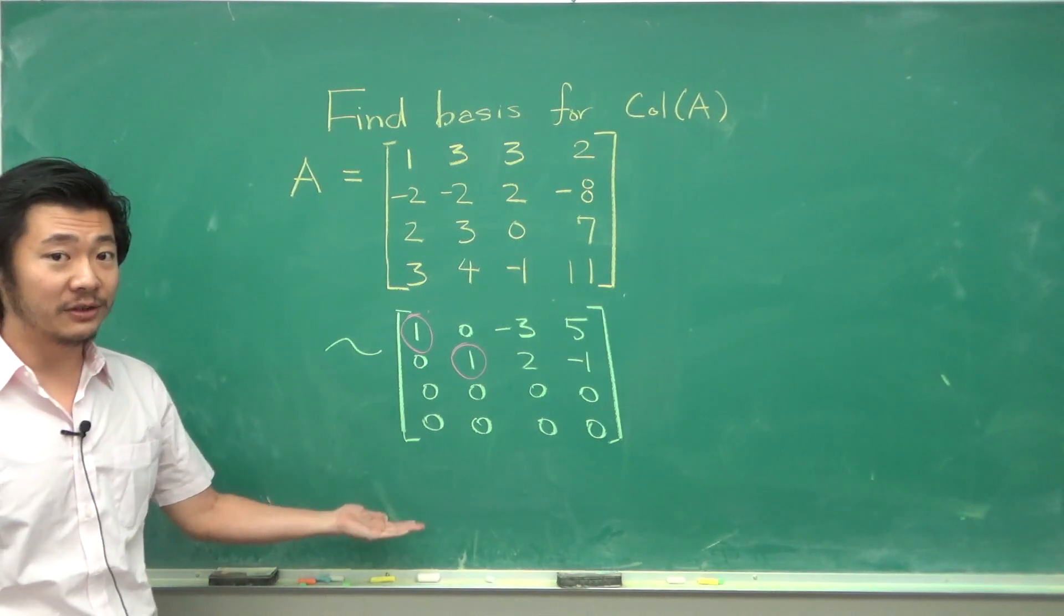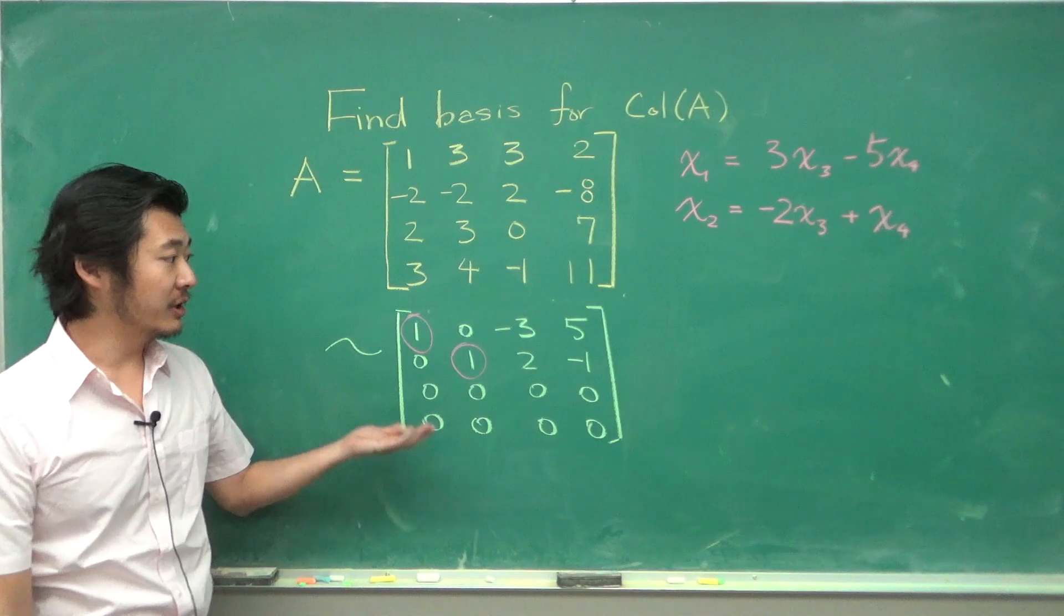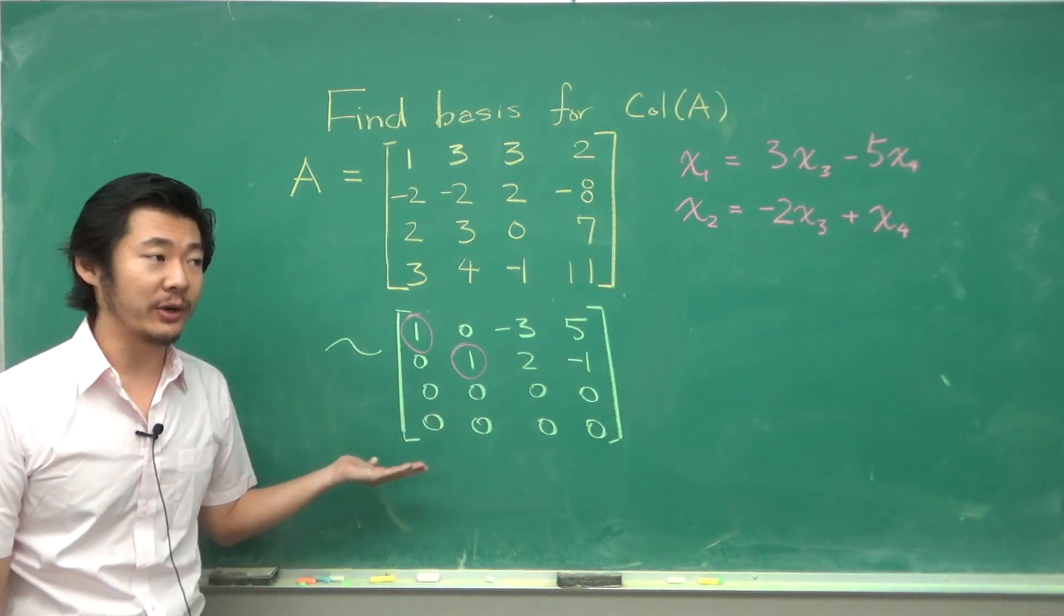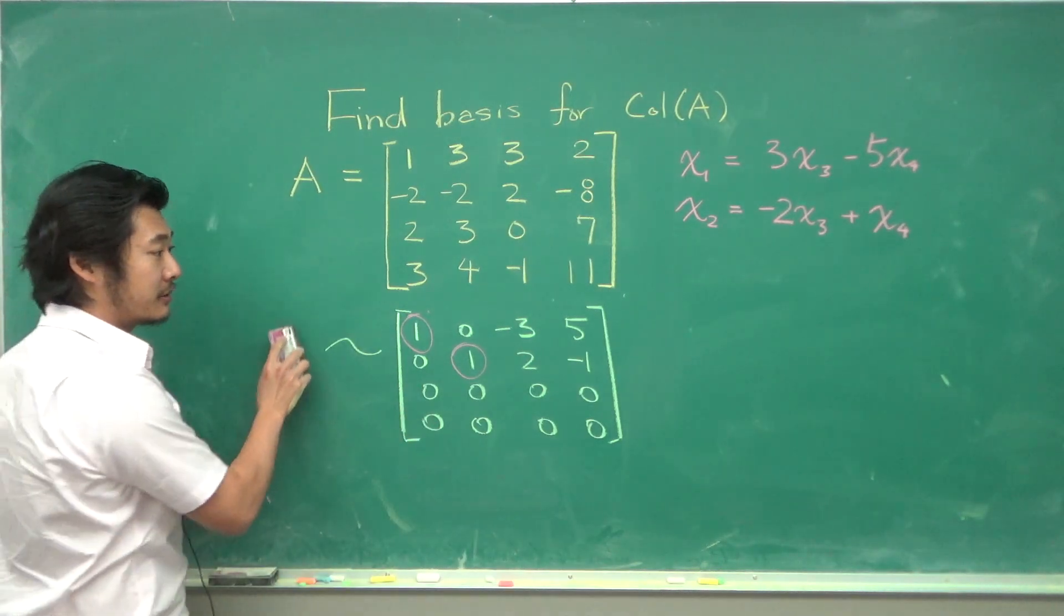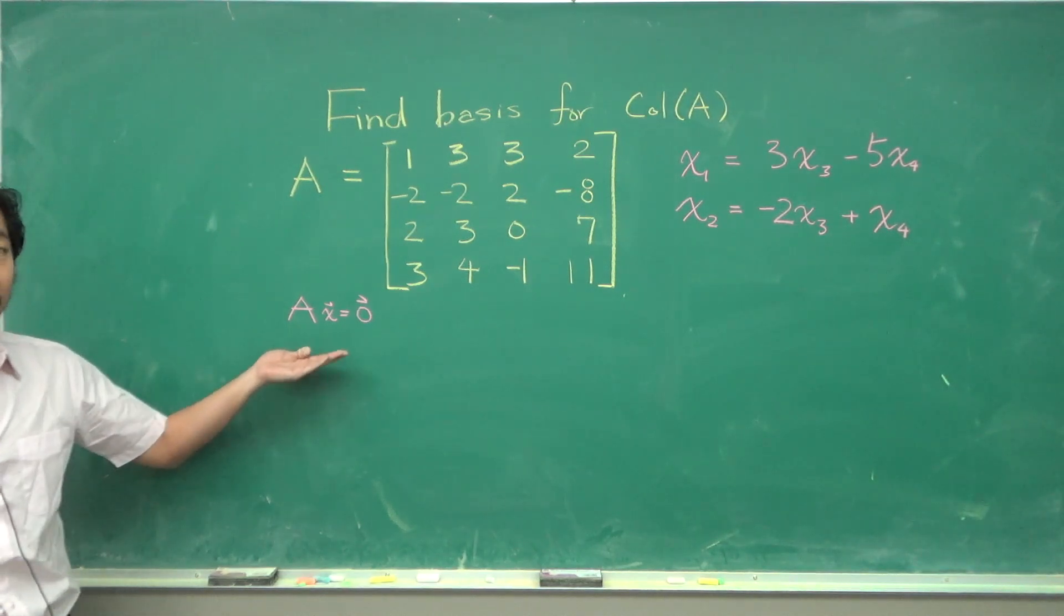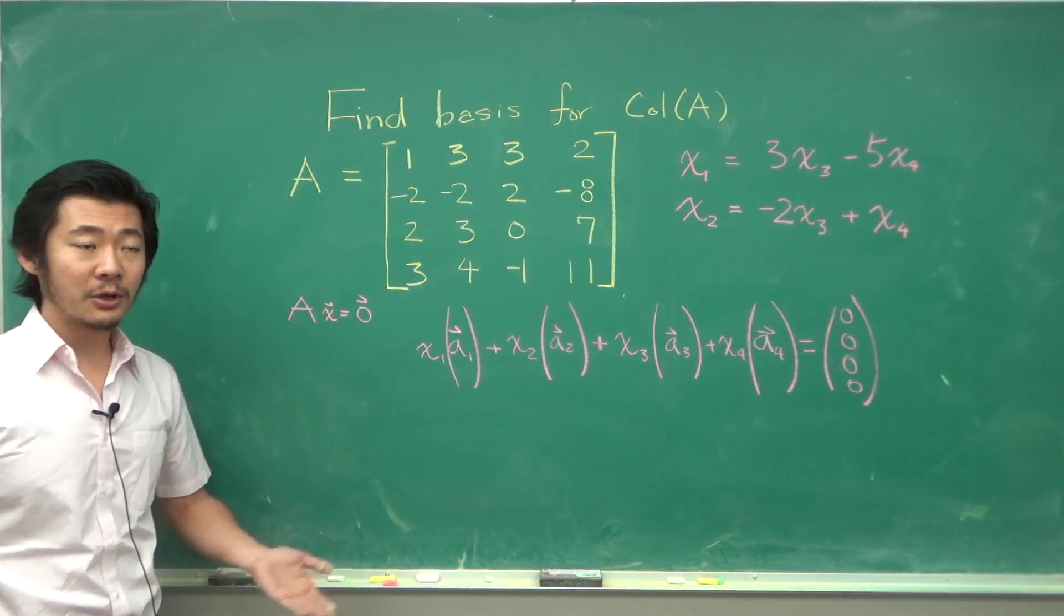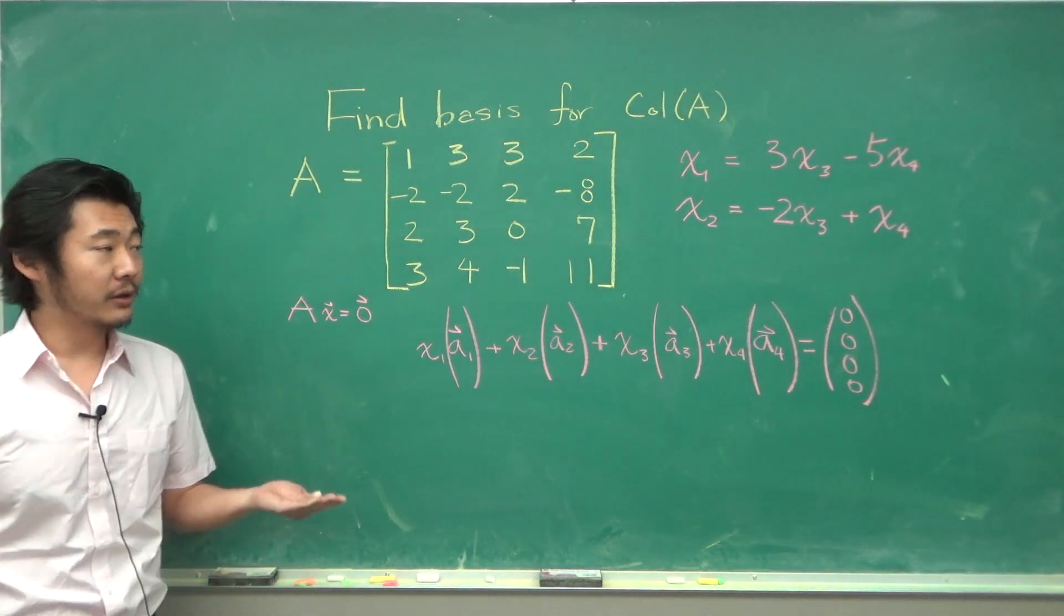So if we write out how the variables depend on each other we have something like this. Remember this was for a homogeneous equation. Now if we write out the homogeneous equation in terms of the columns of A we get something like this, and since x3 and x4 are free variables we can set them to be whatever number they want.